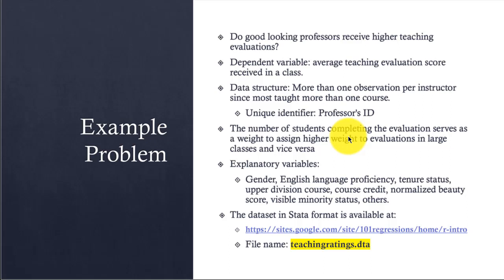The explanatory variables and controls are: gender of the instructor, English language proficiency, tenure status, whether the course is upper division or lower division, course credit, visible minority status of the professor, and the key variable of interest is the normalized beauty score recorded by students for each instructor.